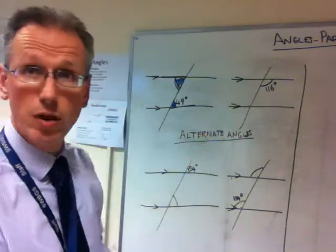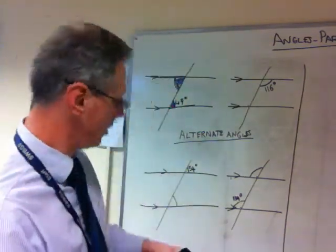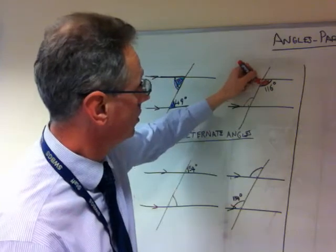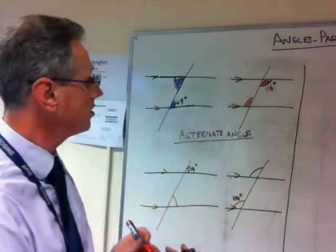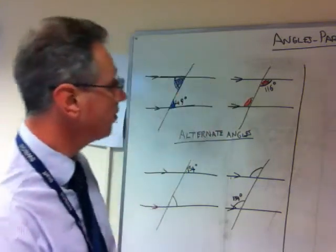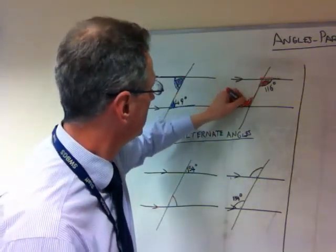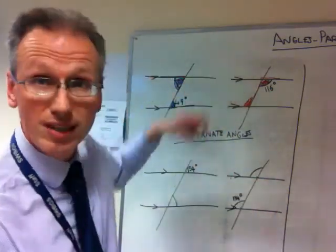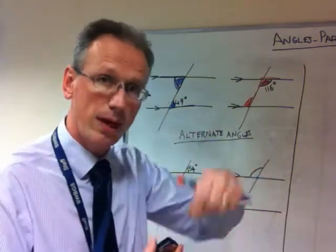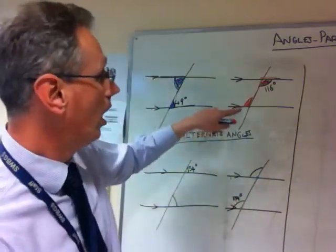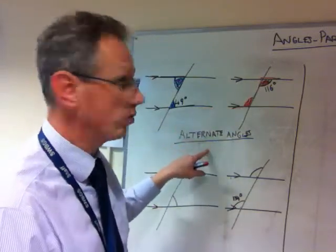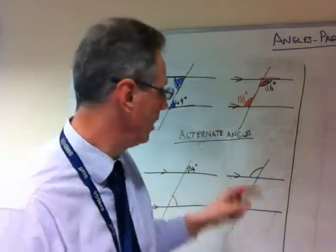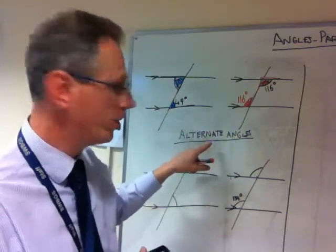Here is another example of an alternate angle. In this situation, it may look like an upside-down Z, so you can turn the page to get a better look. But these are, again, alternate angles. So if that angle is 116 degrees, then this one is also 116 degrees. The first keyword is alternate angles.